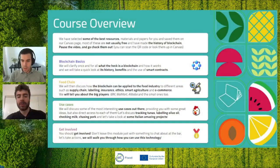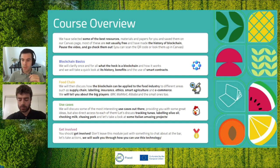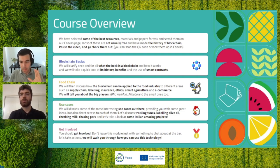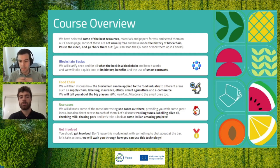First thing: definitely go on Canvas and check out the resources we put there for you. There are some of the best resources out there — they're not usually free — so you can find all the original papers from Satoshi Nakamoto about Bitcoin, all the original papers on the food industry, and all the blog posts we dug up for you. The course is split into four modules: blockchain basics, where Francesco explains exactly how blockchain works and its benefits; then food chain, covering how blockchain applies to the food industry including supply chain, labeling, insurance, agriculture, and e-commerce.